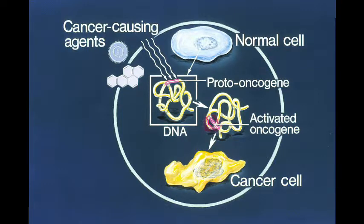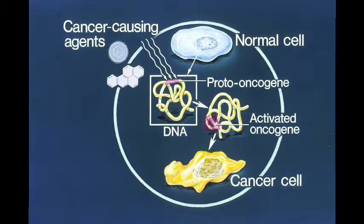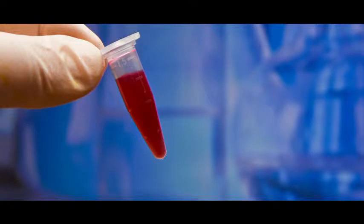Genes involved in cancer: in normal cells, proto-oncogenes are responsible for contact inhibition. There are also tumor suppressor genes and suicide genes. After oncogenic transformation, proto-oncogenes convert into oncogenes, which no longer perform contact inhibition. The tumor suppressor genes and suicide genes also become ineffective at stopping the tumor, and this is what causes cancer.